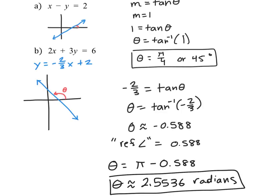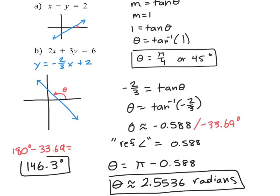It might make more sense to do this one in degrees. The arc tangent gives about negative 33.69 degrees, which is clearly not our answer. Think of it as a reference angle of positive 33.69 degrees, then do 180 degrees minus that reference angle to get approximately 146.3 degrees. If that helps you visualize the angle, try doing it in both radians and degrees — either way is okay, both answers are equivalent.